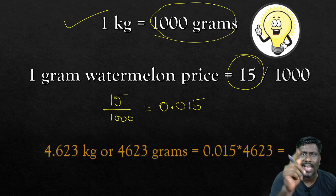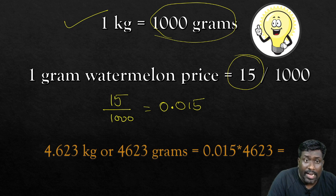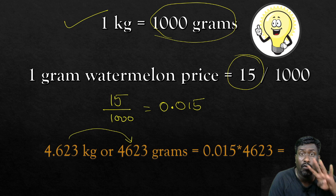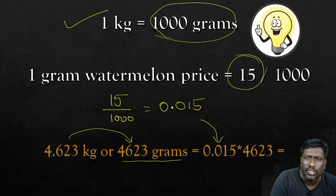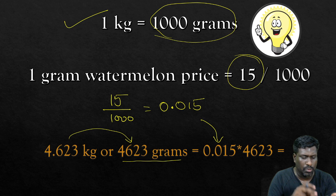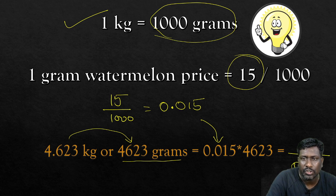The problem is over. If you want to calculate for 4.623 kg, I can write this like 4 kg is nothing but 4000 grams plus 623, that is 4623 grams. If I want to calculate it, I know the price of 1 gram - that is 0.015. Just open your mobile phone: 0.015 into 4623, you will get the price you should pay. It is very simple.